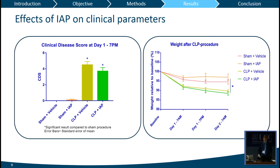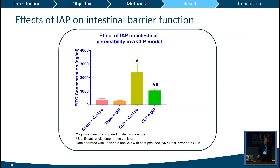For intestinal permeability, measured with the FITC dextran test, the CLP procedure induced significantly increased intestinal permeability. In the vehicle group it was significantly higher than in the intestinal alkaline phosphatase group, so intestinal alkaline phosphatase did have an effect on intestinal permeability.